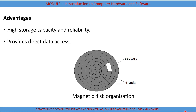The advantage of using the magnetic disk is that it provides high storage capacity and is more reliable. You can see here the organization of the magnetic surface into tracks and sectors. These concentric circles are the tracks, and within them the individual segments are the sectors. To write data onto the surface of a disk, we need to identify the correct track number as well as the sector number.